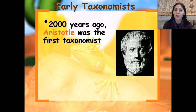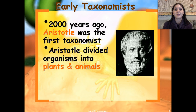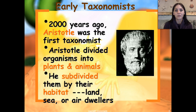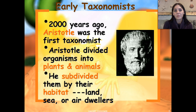So there were a lot of people who contributed to taxonomy. The very first known taxonomist was Aristotle. He lived about 2,000 years ago, and he divided organisms into plants and animals. Once he divided them into those two categories, he then further divided them based on where they lived — whether they were land dwellers, sea dwellers, or air dwellers.